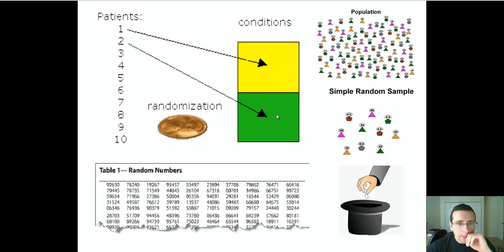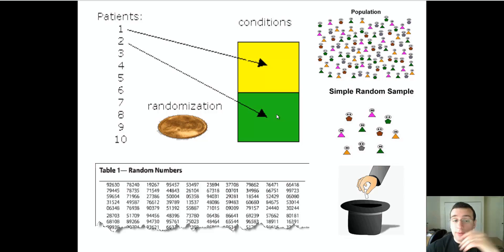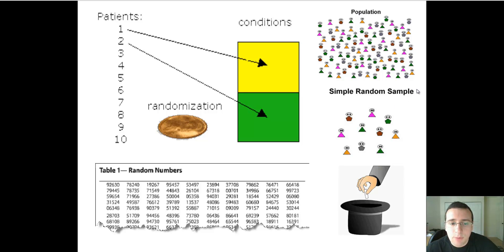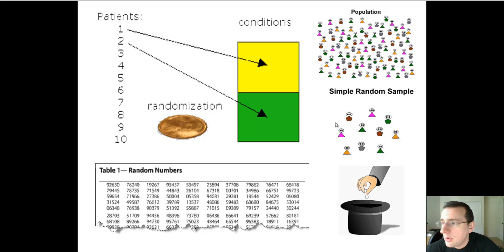This is what we call a simple random sample — when you take the entire population, use one of these randomizing techniques to select a group of the population randomly, and then place them into their conditions randomly as well.